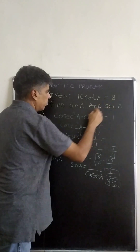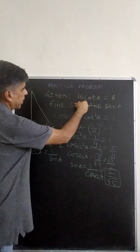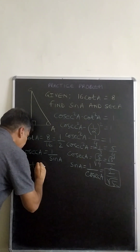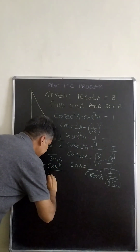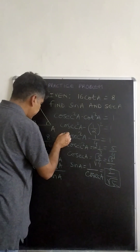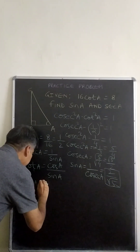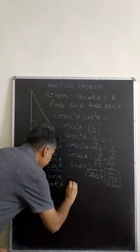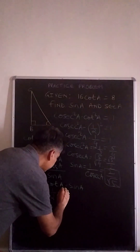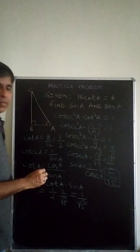Now we have to find sec A. We know that cot A equals cos A upon sin A, so cos A equals cot A multiplied by sin A. Cot A is one half and sin A we have calculated as 2 upon root 5. So cos A equals one half times 2 upon root 5, which comes out to be 1 upon root 5.